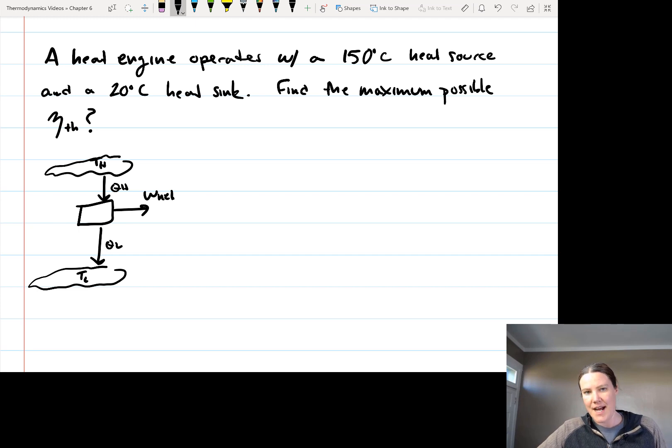So this is just a diagram showing what's going on, but to solve this problem, we don't actually need this diagram, because it wants us to find the maximum possible thermal efficiency. So the maximum possible thermal efficiency is the Carnot cycle efficiency.